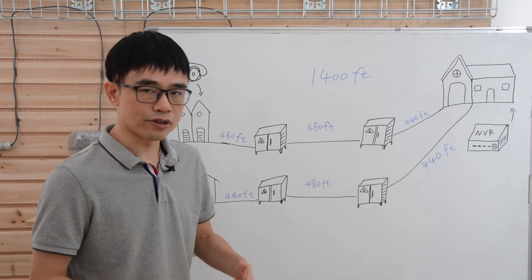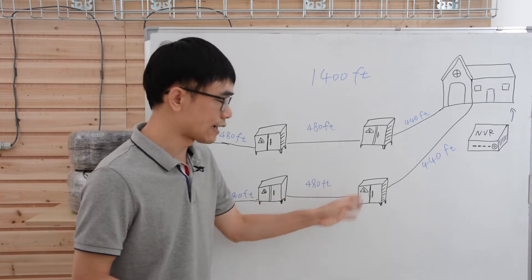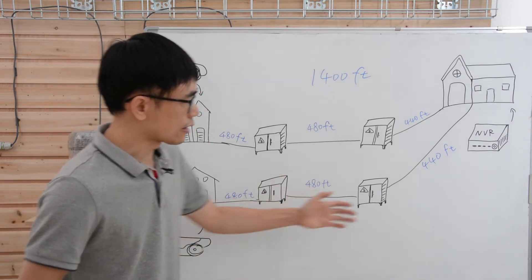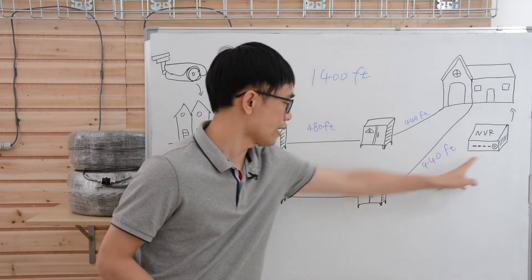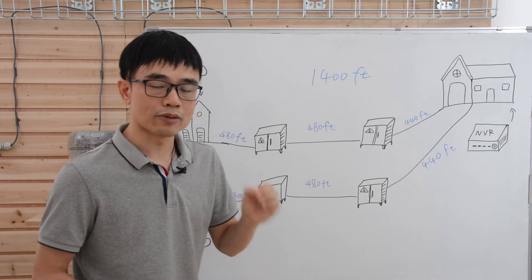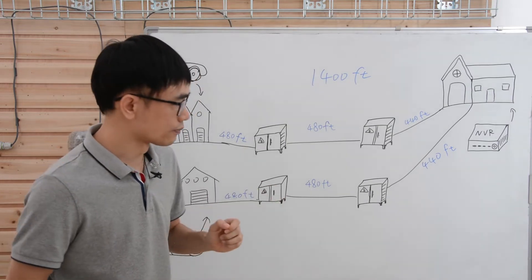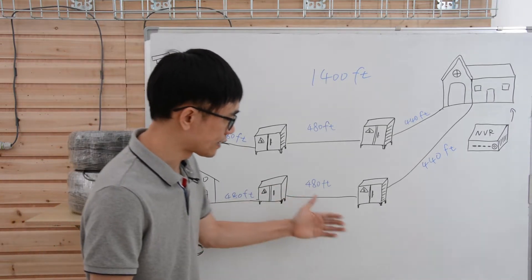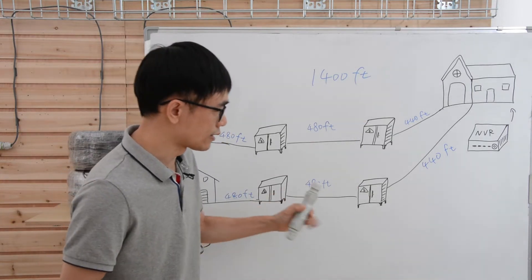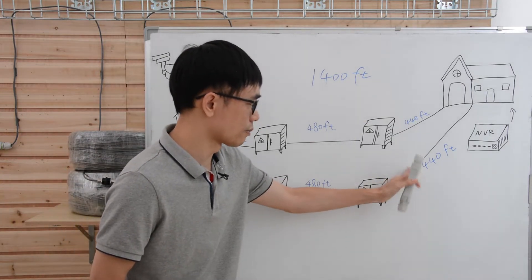Even if there are some issues in the future, he can reach the PoE extension equipment and diagnose the issue. But you can see there is about 440 feet from the NVR to the first enclosure. And we know the PoE only can reach about 328 feet. That means we cannot place the PoE extender in this enclosure. The PoE extender needs to be placed before, maybe somewhere here.